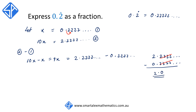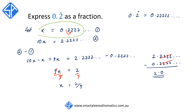So now we have 9x is equal to 2. Dividing both sides by 9 we get x is equal to 2 over 9. Since we started off by defining x as being equal to 0.2 repeater, this means that 0.2 repeater can be written as 2 ninths as a fraction.